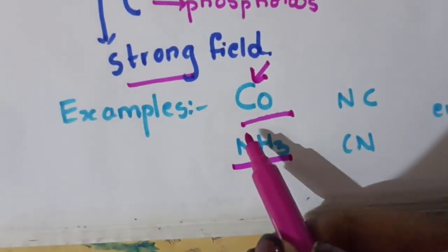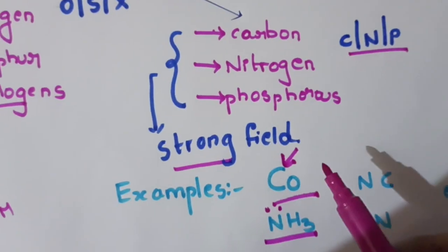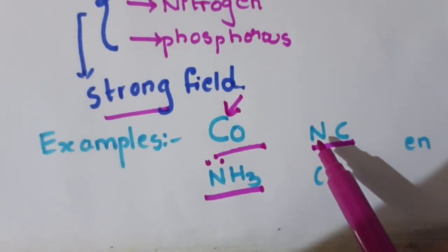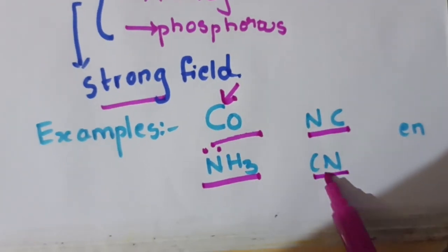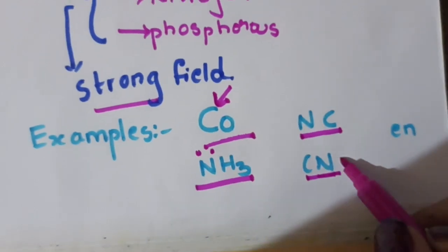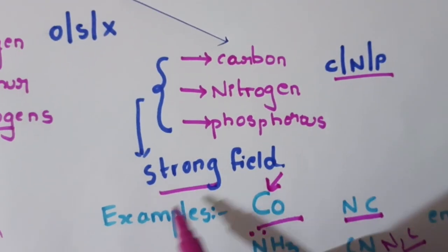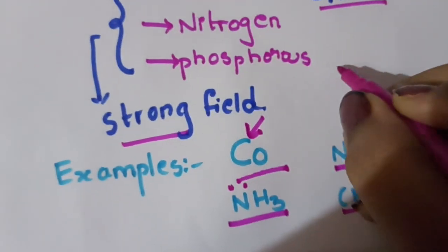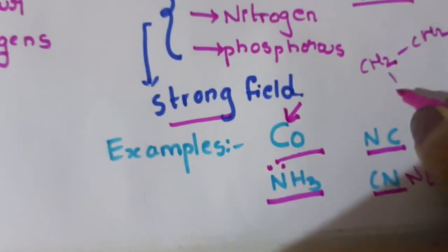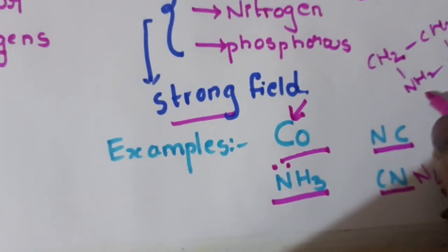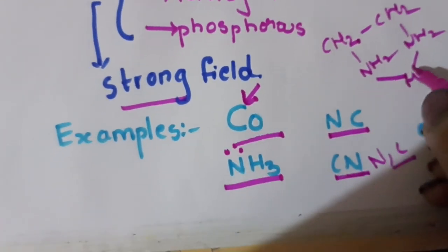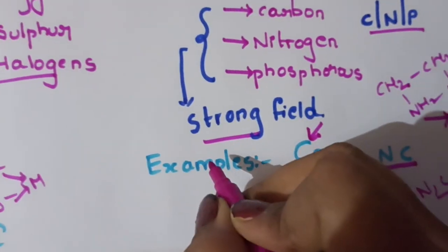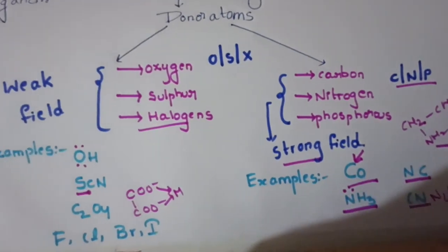Here Ammonium is the donating atom, so Nitrogen is the donating atom. Nitrogen donating atom is a strong field ion.